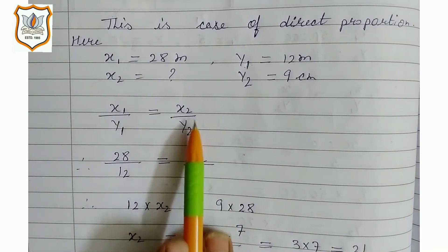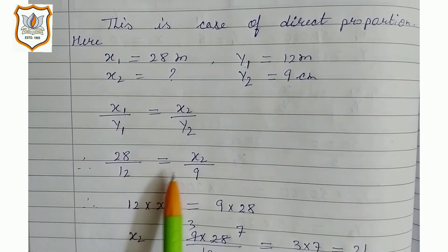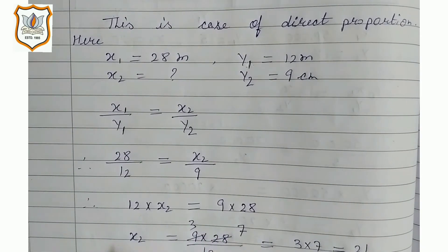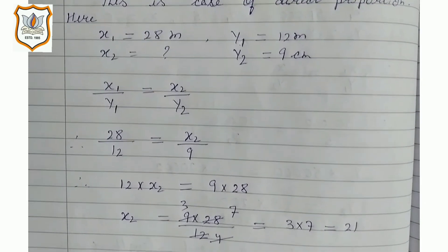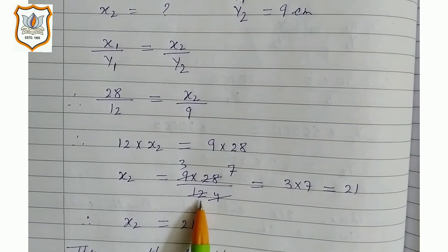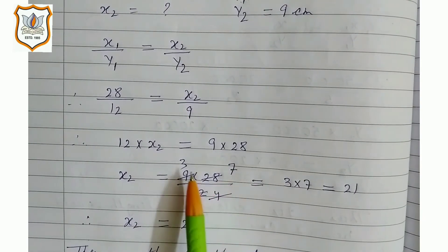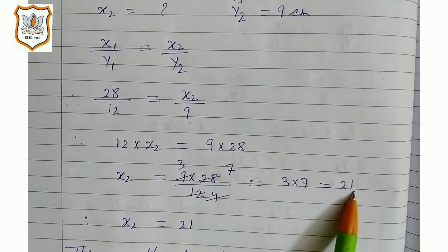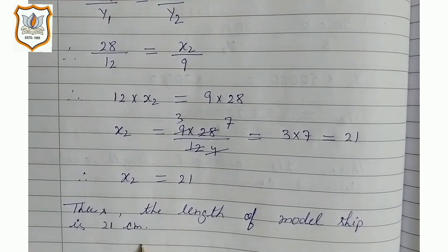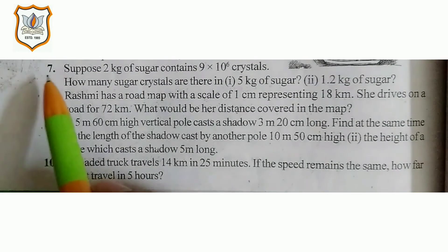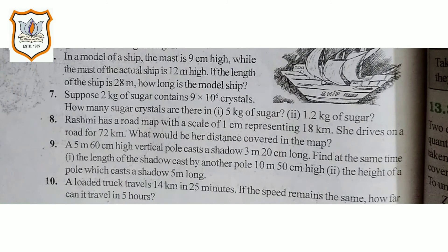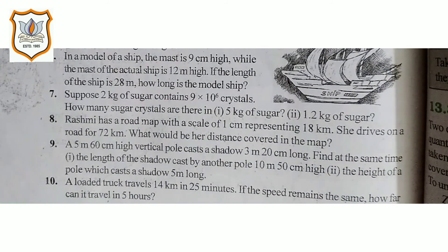x1 upon y1 is equal to x2 upon y2. Therefore 28 upon 12 is equal to x2 upon 9. Cross multiply: 12 × x2 is equal to 9 × 28. x2 equals 9 × 28 upon 12. Simplifying: 9 divides by 3 gives 3, 12 divides by 4, 28 divides by 4 gives 7; so 3 × 7 equals 21. Thus the length of the model ship is 21 centimeters. Students, the 7th and 8th sums are your homework. We will solve the remaining sums of this exercise in the next video. Thank you.